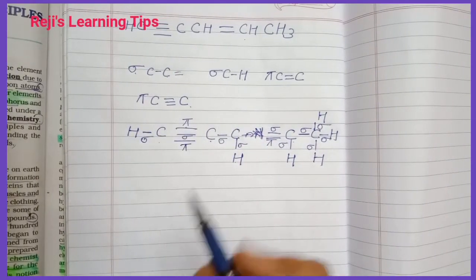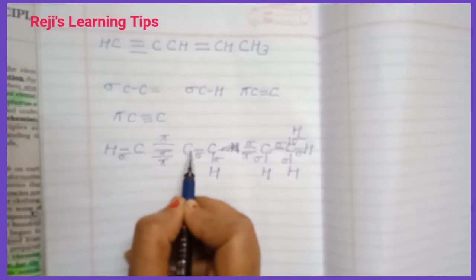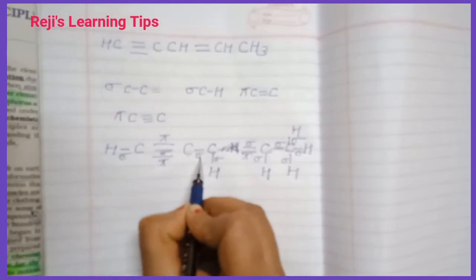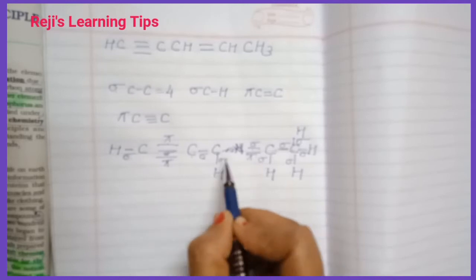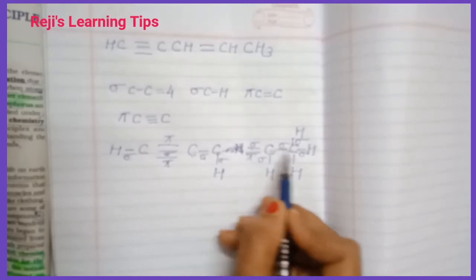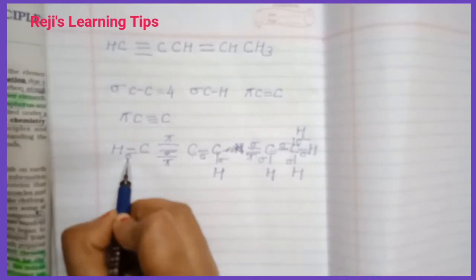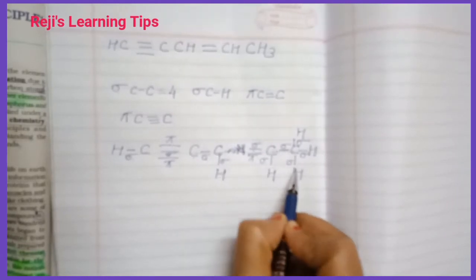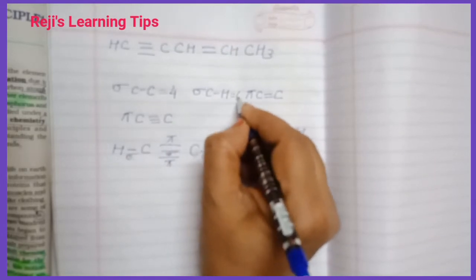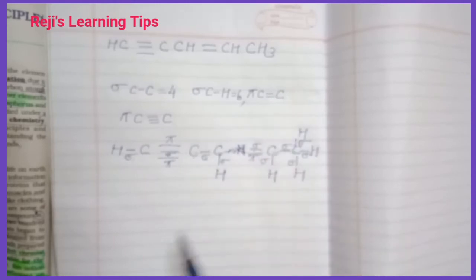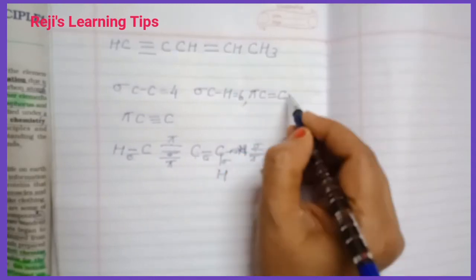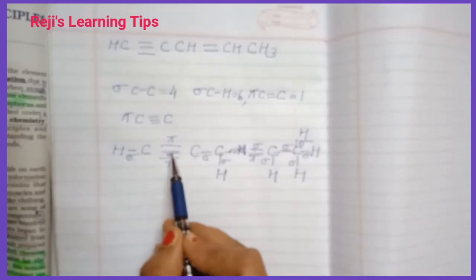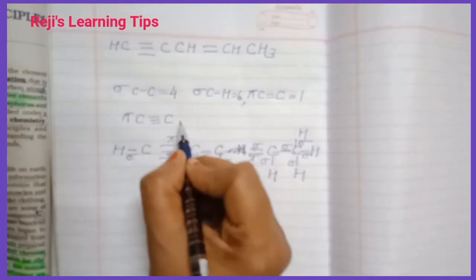Counting sigma bonds: each single C–C bond is one sigma. Going through the molecule: sigma bond 1, 2, 3, 4. Then 5 and 6 — total 6 sigma bonds. For pi bonds: one C=C double bond gives 1 pi, and one C≡C triple bond gives 2 pi bonds — total 2 pi bonds.